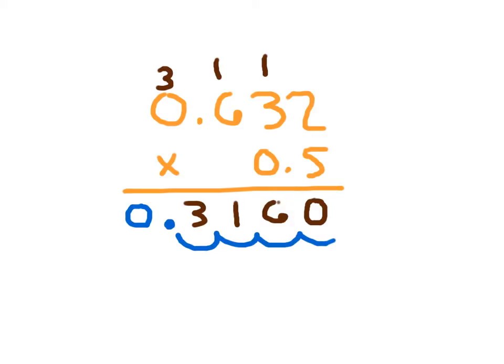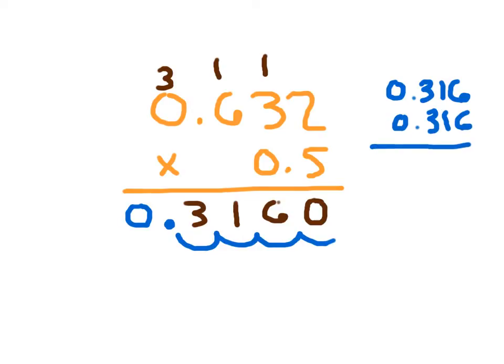This answer actually makes sense. 0.316 — hey, 0.5 is just one half. If I take half of 0.632, do I get 0.316? If I added two of them together, would it really be 0.632? And as you can see with the work here, it is.